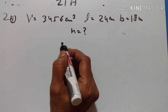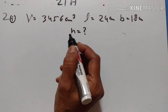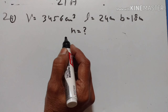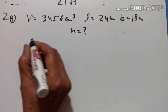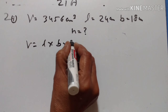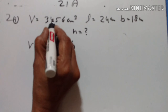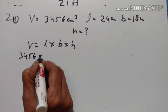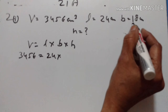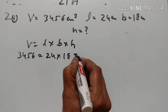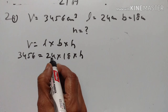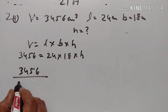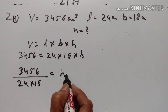In this problem, volume of a cuboid is given. A cuboid has different length, breadth, and height, whereas in a cube all sides are equal. Volume = length × breadth × height = 3456 cm³, length = 24 cm, breadth = 18 cm. We have to find height, so h = 3456 ÷ (24 × 18).